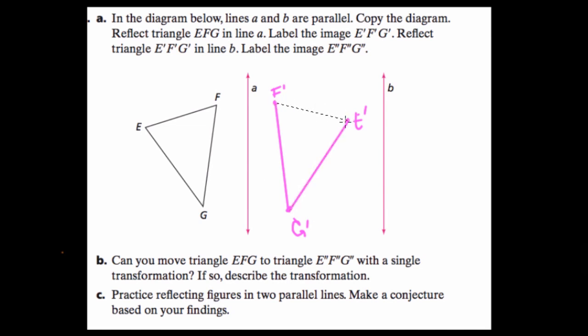And then what they want us to do is do the same thing and reflect it again over line B. And this is where you want to predict what's going to happen. If we reflect our reflection, and we get E double prime, F double prime, G double prime, what should it do?